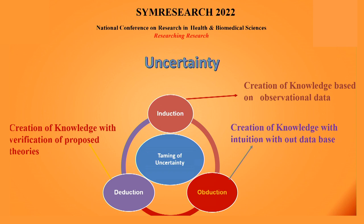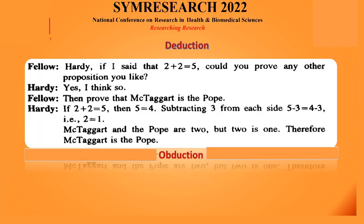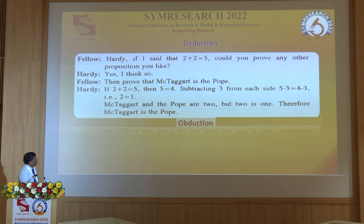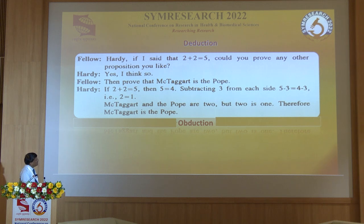Let me give an example of deduction. If I say two plus two is five, could you prove any other proposition you like? If yes, then prove that McTaggart is the Pope. If two plus two is five, then five is four. Subtracting three from each side: five minus three equals four minus three, so two is one. Therefore McTaggart and Pope are two, but two is one, so they are the same. This is a kind of assumption — stick to it. That is the danger.